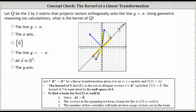However, if we take a look at this third vector that's perpendicular to the line y equals x, here in blue — the vector (-6, 6) — if this is projected orthogonally onto the line y equals x, the result is the zero vector, which indicates this vector is in the kernel of Q. In fact, any vector that's perpendicular to the line y equals x when projected orthogonally onto the line y equals x will give us the zero vector.